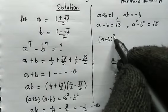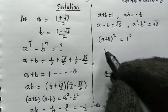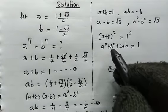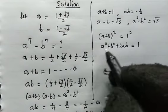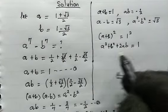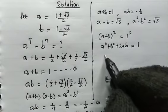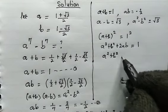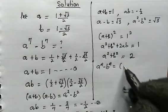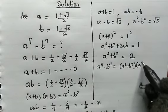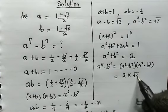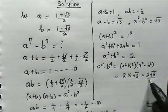Now let's square both sides of equation 1. Expanding gives A² + B² + 2AB = 1. Since AB = −1/2, we get 2 × (−1/2) = −1. So A² + B² − 1 = 1, meaning A² + B² = 2. We can now find A⁴ − B⁴ = (A² + B²)(A² − B²) = 2 × √3 = 2√3.